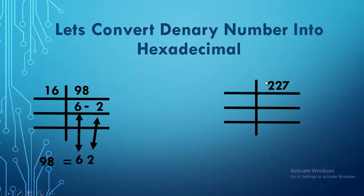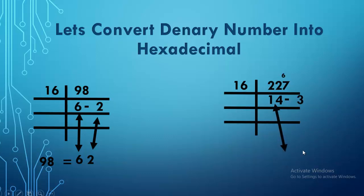Now we are going to solve part B. This time our denary number is 227. We need to make a pair because 2 is less than 16. 16 times 1 is 16, 16 times 2 is 32, which is greater than 21, so we go 16 one time — remainder is 6. Now divide 67 by 16: 16 times 4 is 64, remainder is 3. Now we cannot divide 14 by 16, so 14 comes down here.